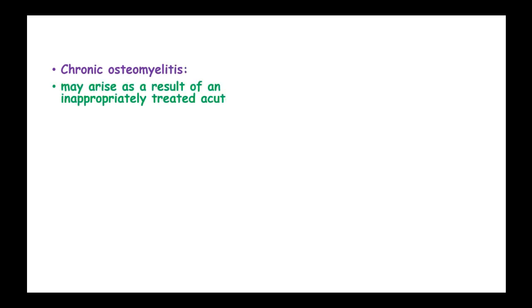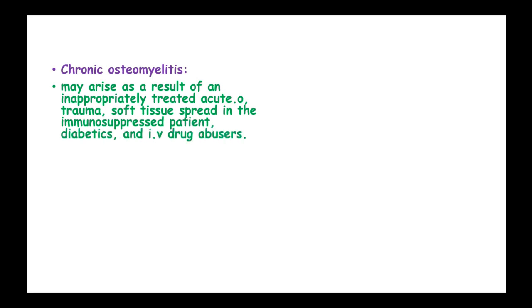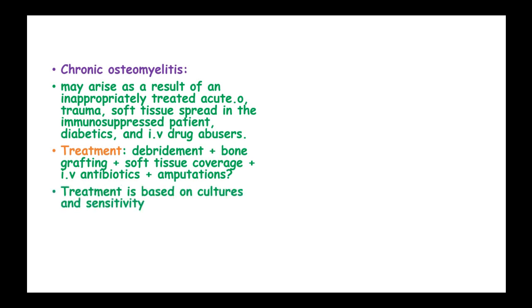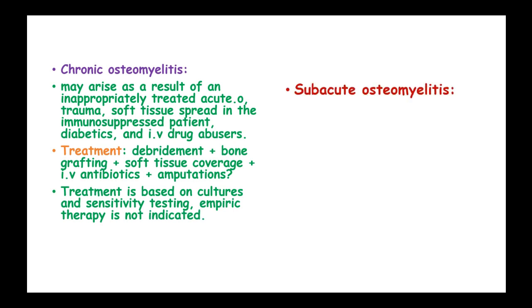Chronic osteomyelitis may arise as a result of inappropriately treated acute osteomyelitis, trauma, soft tissue spread, immunosuppression, diabetes, and intravenous drug abuse. Treatments include debridement, bone grafting, soft tissue coverage, intravenous antibiotics, and amputation. Treatment is based on culture and sensitivity testing, and empiric therapy is not indicated in these patients.